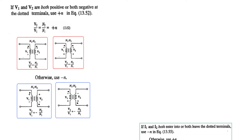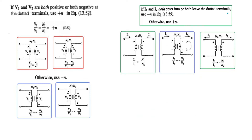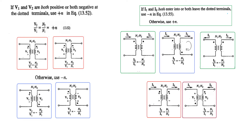The same is true for the current, but it is just the opposite. That is, if I1 and I2 both enter or both leave the dotted terminal, then we will use minus signs. So here, both entering the dot — minus sign. Here also both entering the dot — minus sign. Both leaving the dot — still minus sign. But if one is entering the dot and the other is leaving the dot, then we will have a positive sign. Similarly, one entering the non-dot and the other entering the dot gives a positive sign. So we will use this in solving the equation.